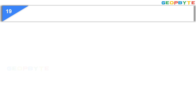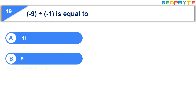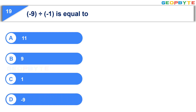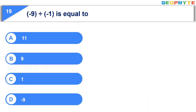The nineteenth question: Minus 9 divided by minus 1 is equal to — Option A: 11. Option B: 9. Option C: 1. Option D: minus 9. Your time starts now. Your time is up. And the correct answer is Option B: 9.